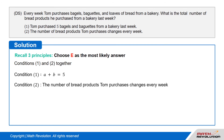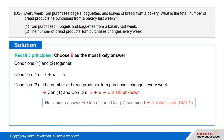Let's verify our answer by looking at both conditions together. Condition 1 and Condition 2 tell us that A plus B equals 5, and that the number of bread products Tom purchases changes every week. With both conditions combined, we cannot get the unique value of A plus B plus C. So the conditions combined are not sufficient by CMT2, which states that there must be only one answer.